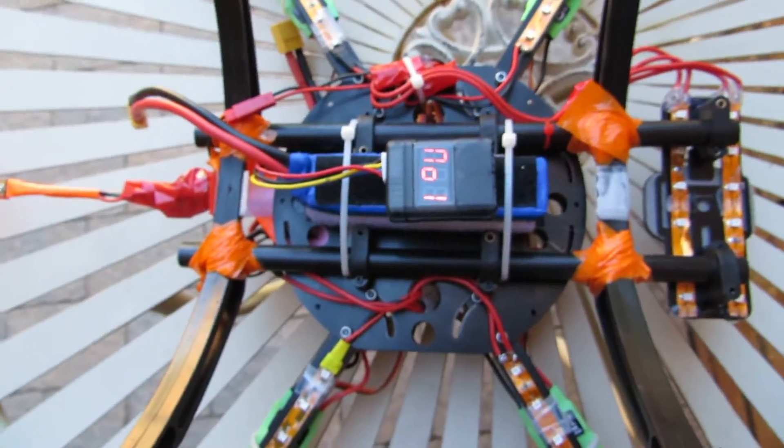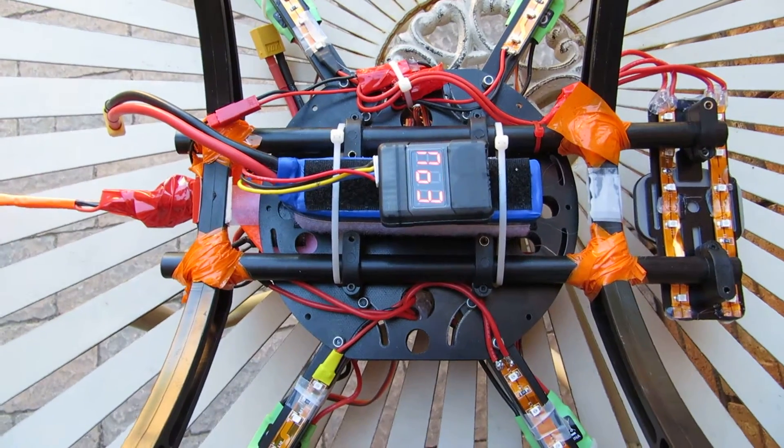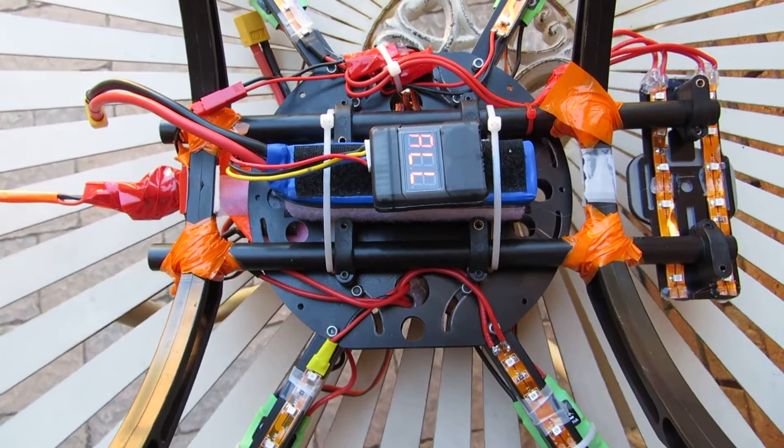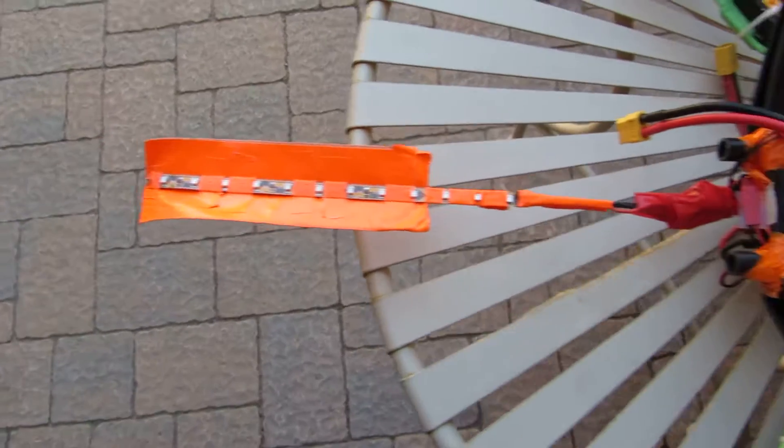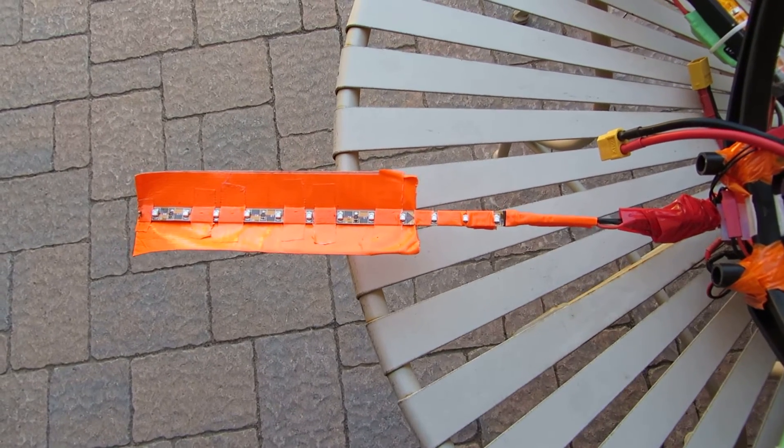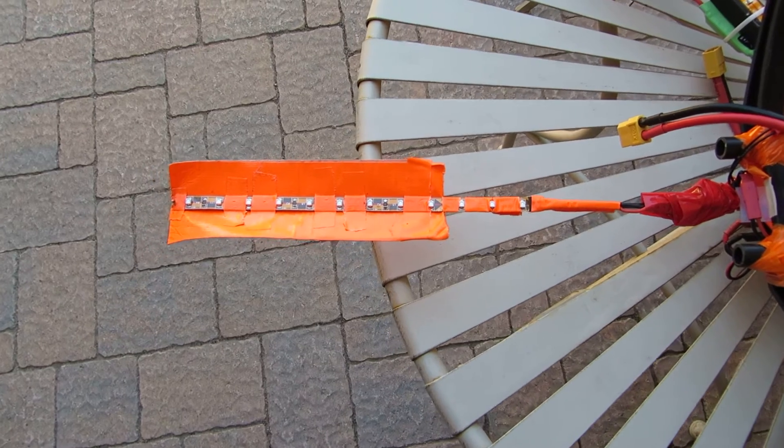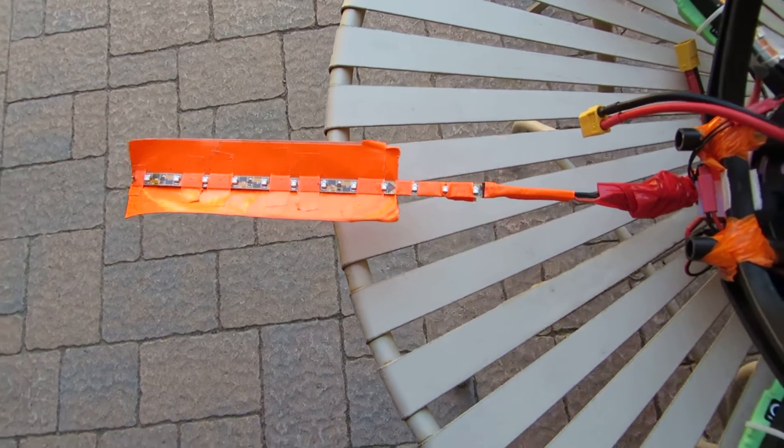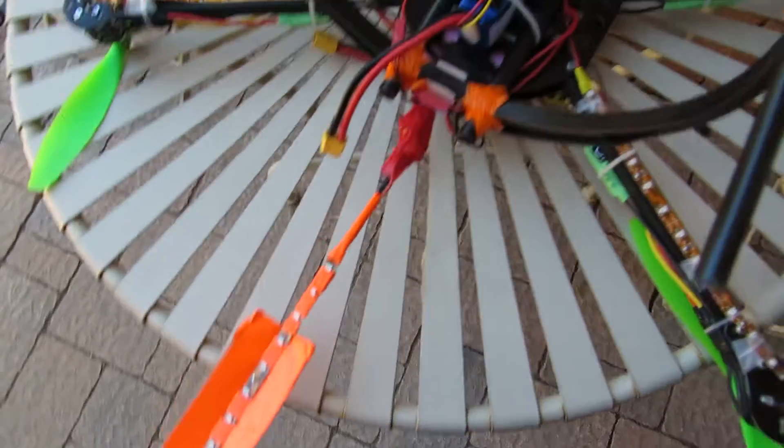We got a three cell 2200 battery velcroed in there. I love this thing I added to my quadcopter and love it. Just helps with that orientation when it's in the air. It's bright and orange, and then with the lights...